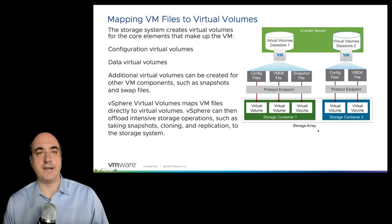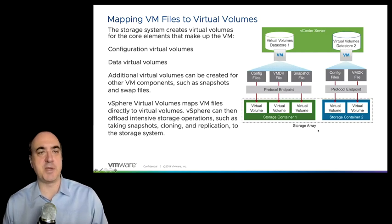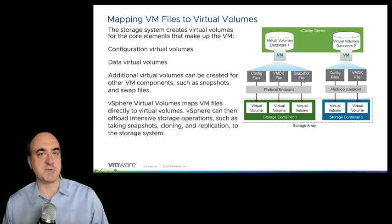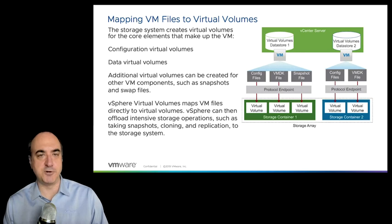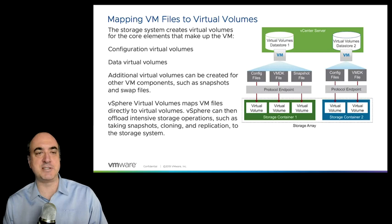Welcome back. After having taken a look at the virtual volumes architecture and understanding some of the different parts to it, one thing to note is that virtual machines are made up of objects. VMs are made up of different kinds of objects: config files, which represent the VM's home folder, virtual disk files, snapshot files, the vSwap file, and the memory state file. Those are objects just like they are in vSAN. In virtual volumes, an object in a VM is basically mapped into a virtual volume in your virtual volume datastore.